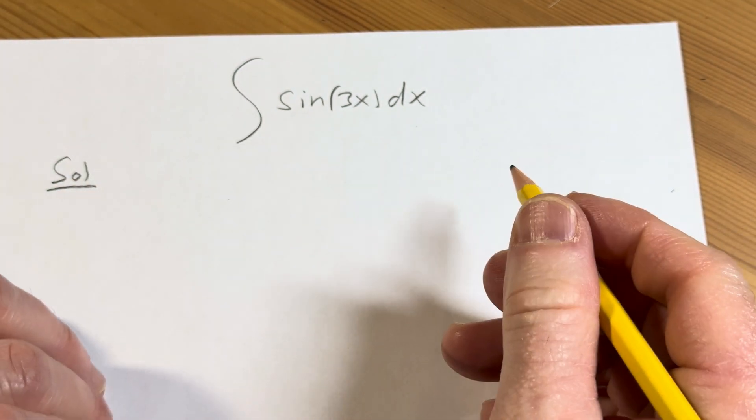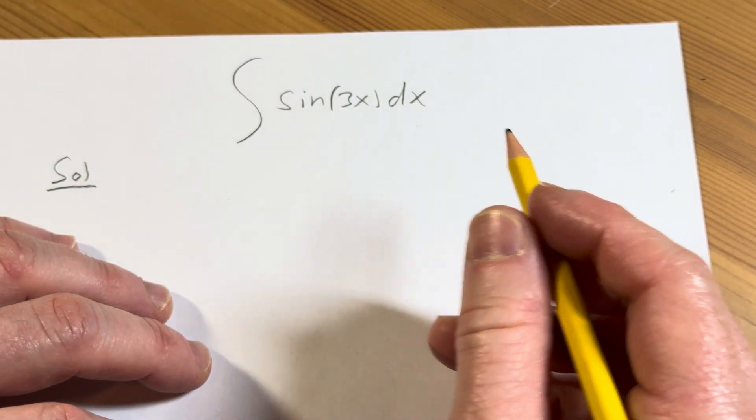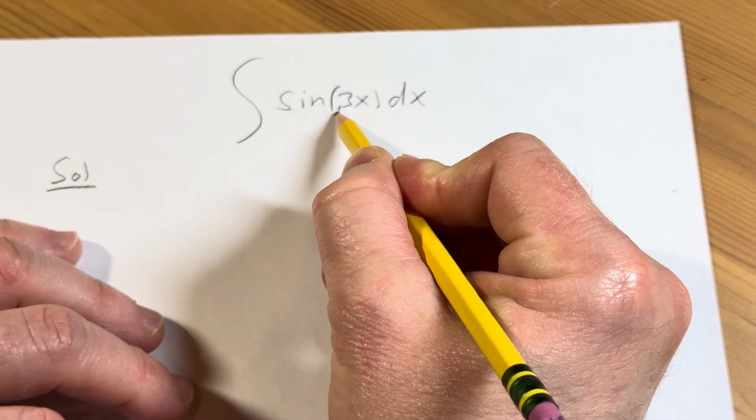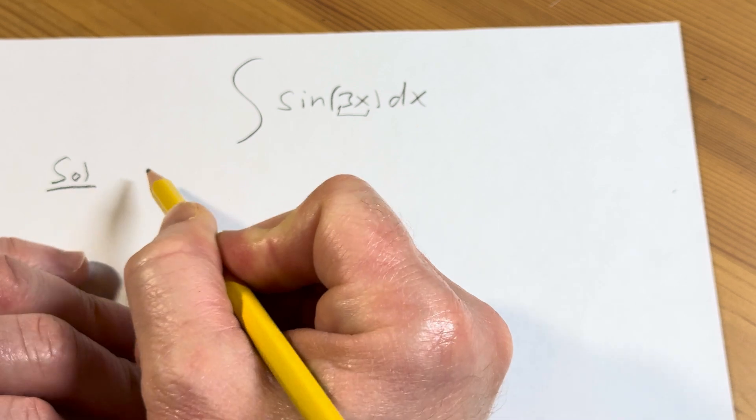let's go ahead and do it by making what's called a u-substitution. So in the u-substitution technique, you have to pick what your u is. In this case, the clear choice for u is 3x.